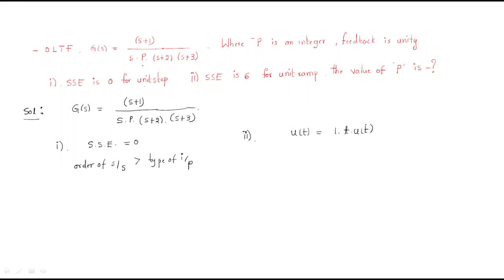For unit ramp, the input signal is 1·t·u(t), where 1 is the magnitude and t·u(t) is the ramp signal. The steady-state error for unit ramp equals a divided by Kv, where a is 1 (unit ramp). Kv is the velocity constant, with formula: Kv = limit as s→0 of s·G(s).